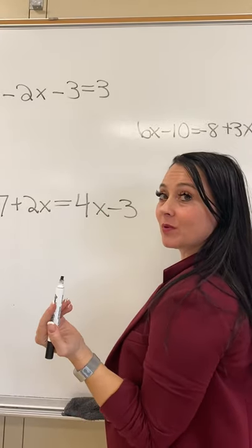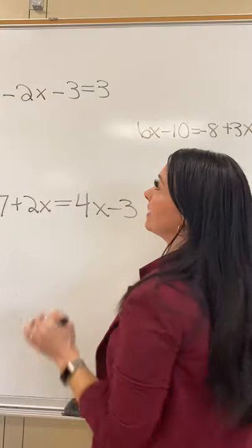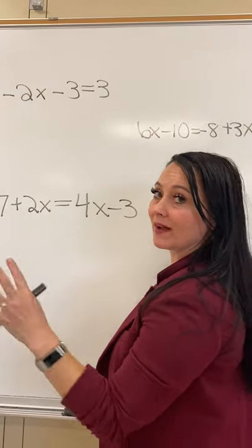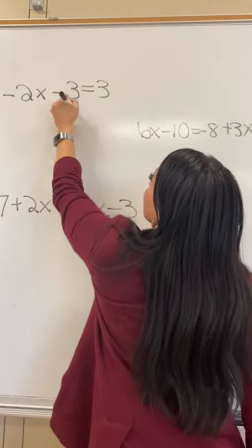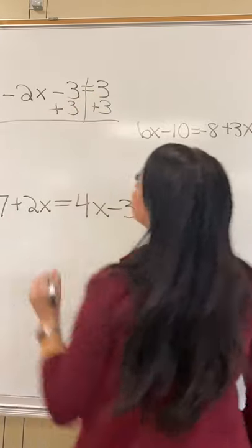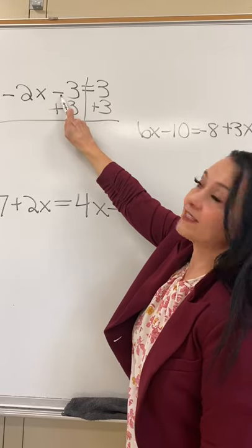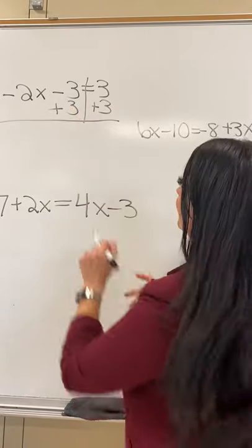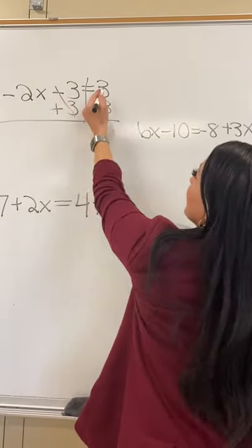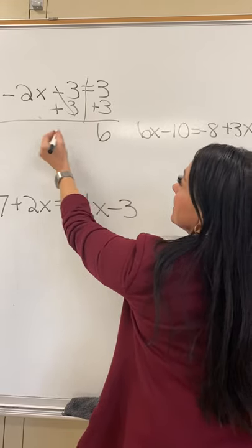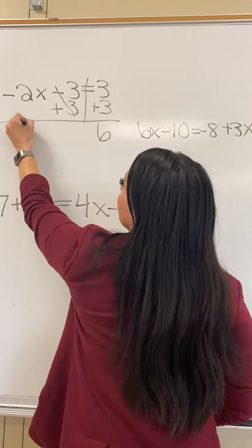I'm just going to add 3 to both sides because I want to keep my negative 2x all by itself. So the reason I'm adding a 3 is because that's how you get rid of that negative 3, do the opposite. So that goes away. 3 plus 3 is 6.